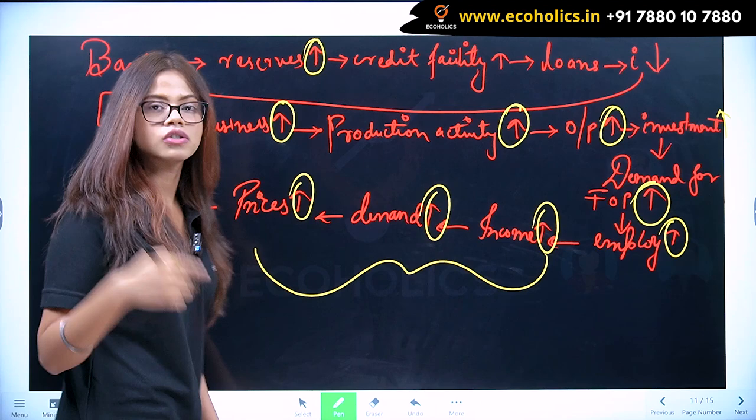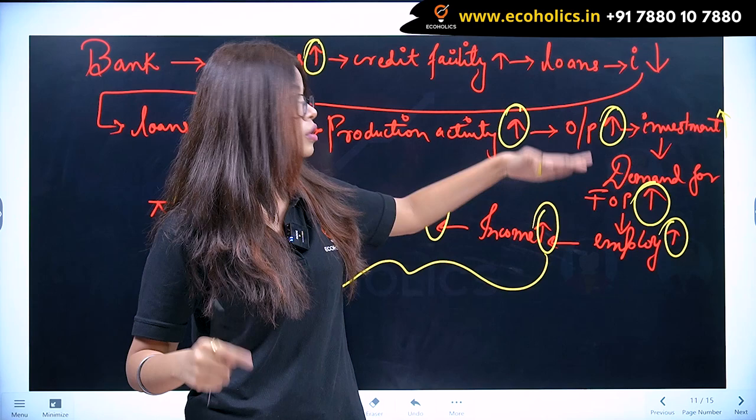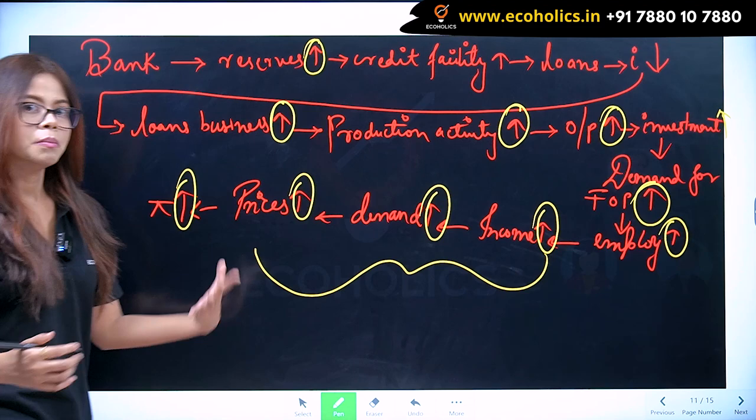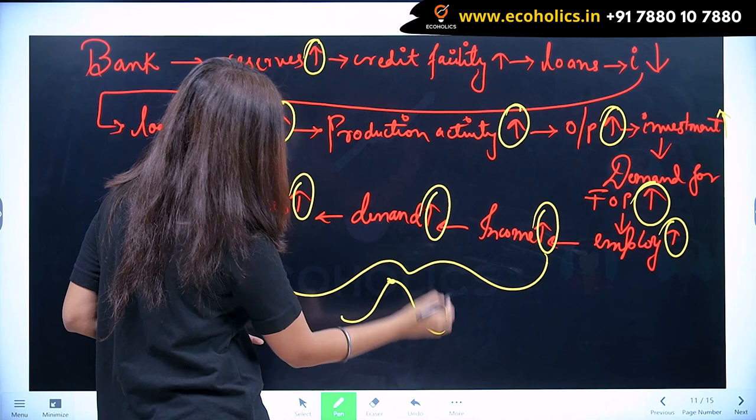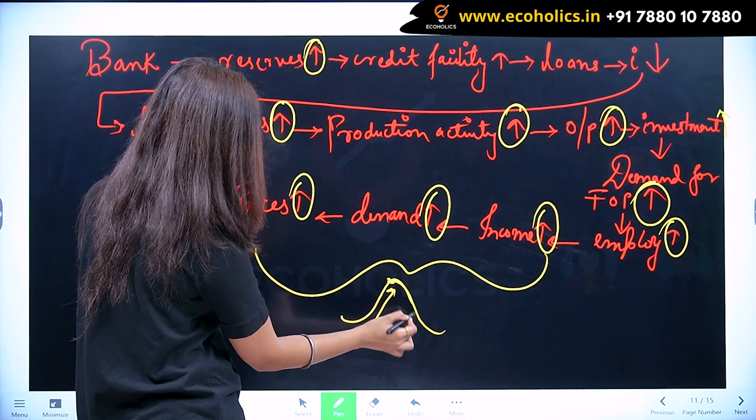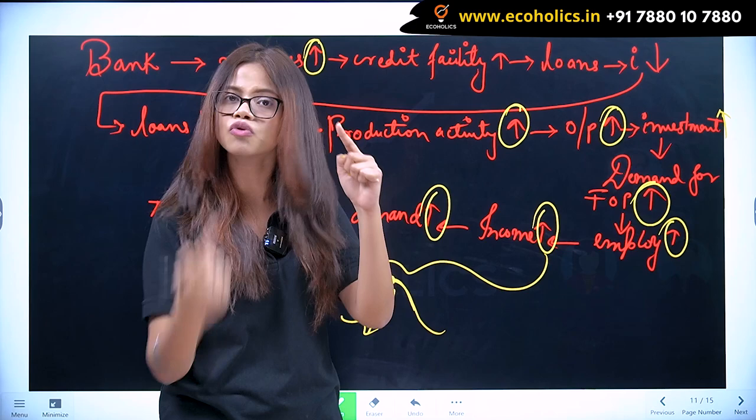This is known as your expansionary phase. Remember the expansionary phase — where employment, output, prices — all things have increased. But what did we see when the expansion comes? After reaching the peak, it has nothing but to fall, right? So the expansionary phase is not permanent in the business cycle — after that it has to fall.